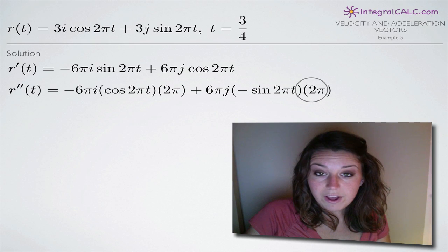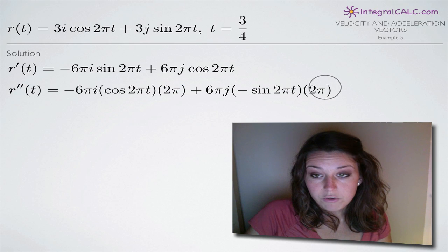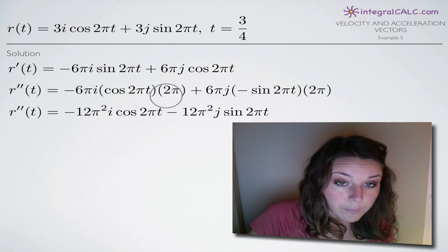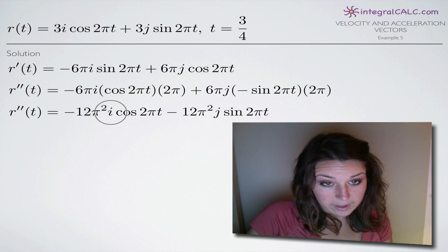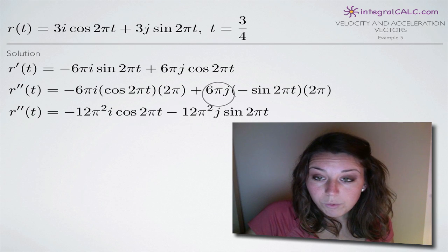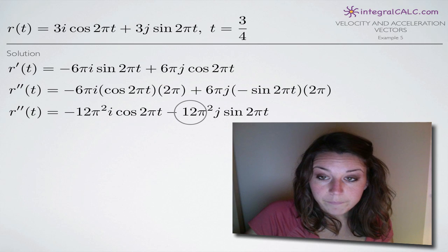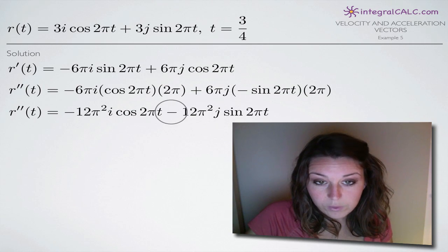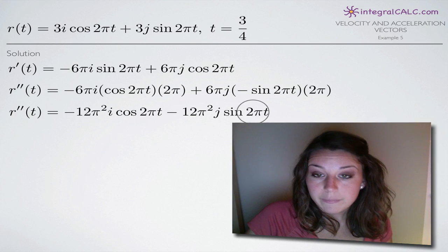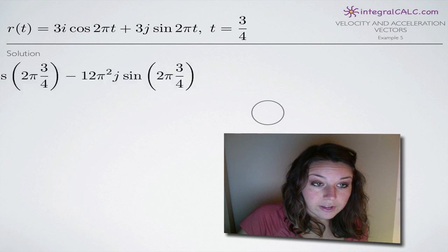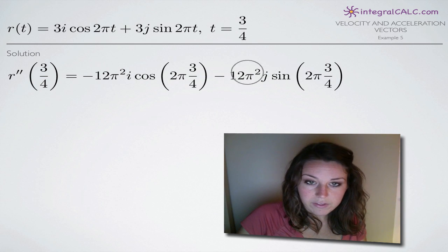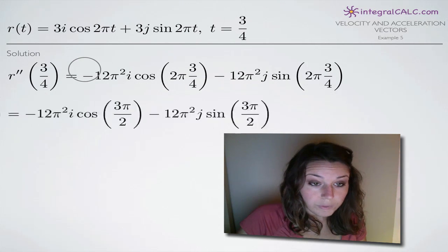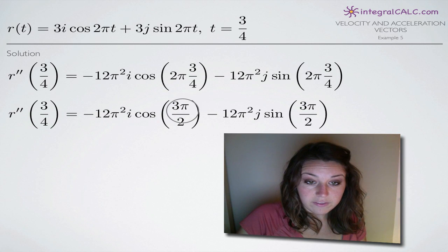Simplifying, we multiply negative 6 pi i by 2 pi, which gives us negative 12 pi squared i for the first term. Similarly, the second term involving j is differentiated the same way. Now we can plug in t equals 3 fourths: 2 pi times 3 fourths gives us 3 pi over 2, the angle at which we evaluate both cosine and sine.